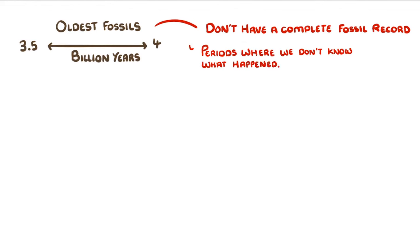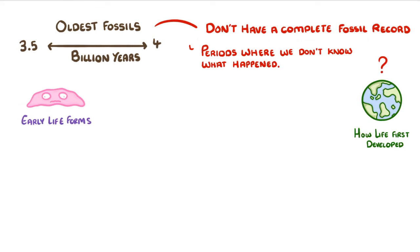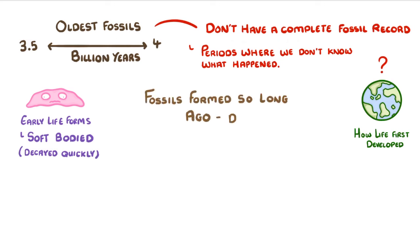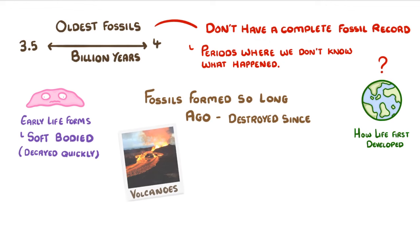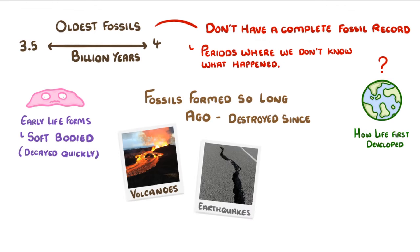Importantly, we still don't know how life first developed on Earth. One reason for this is that many early life forms were soft bodied, so they would have decayed really quickly making any fossil remains unlikely. Another reason is that fossils that formed so long ago may have been destroyed in the time since, for example by volcanoes, earthquakes, or perhaps larger geological activity like the movement of tectonic plates.